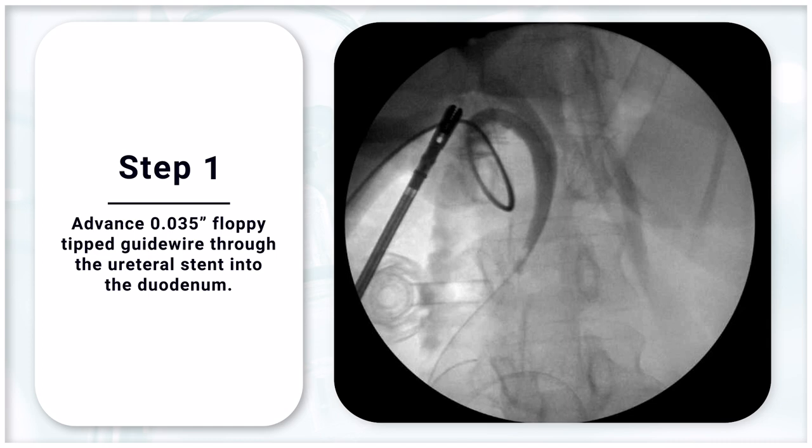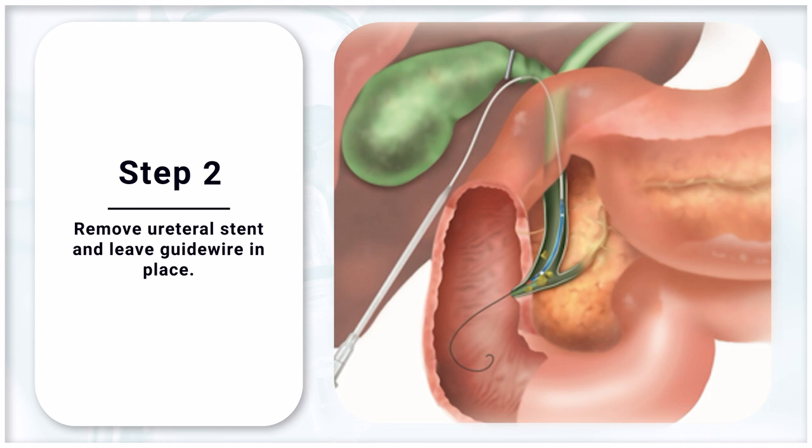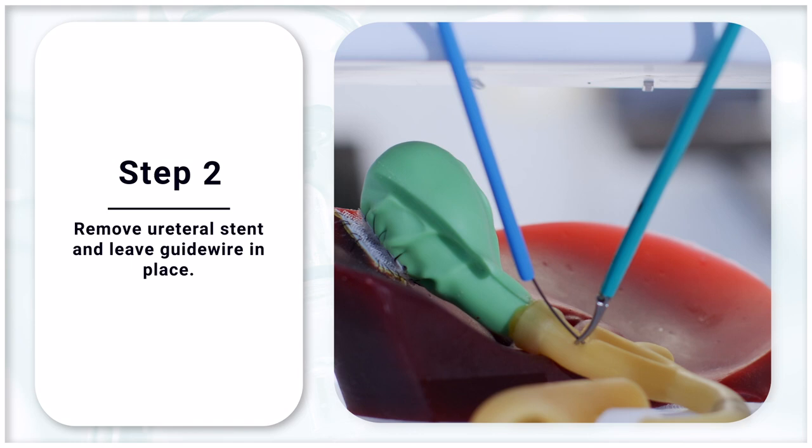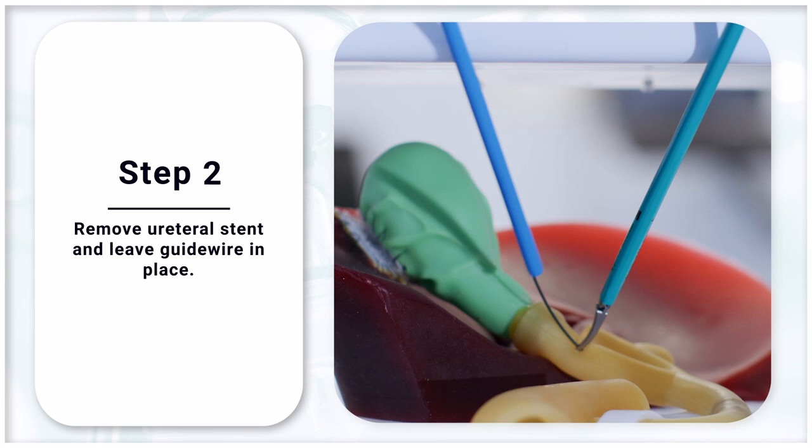Step 2: Remove the stent and leave the glide wire in place. Oftentimes we will grab the wire intra-abdominally at the site of the ductotomy to prevent the wire from springing back and losing access. It should be noted that we do leave the wire in place for the majority of the steps below, with the exception of when we are performing a cholangiogram or power flushing.